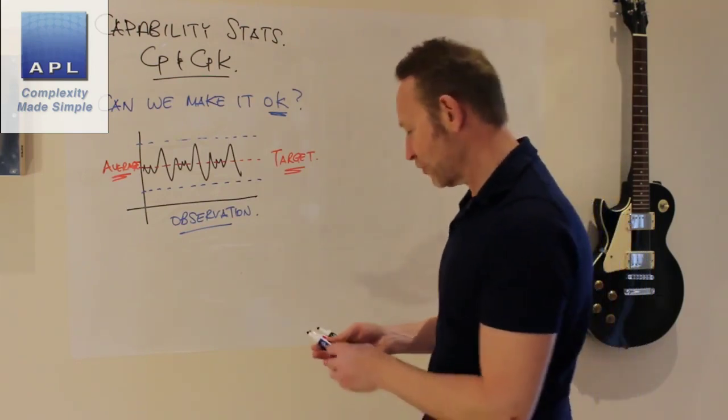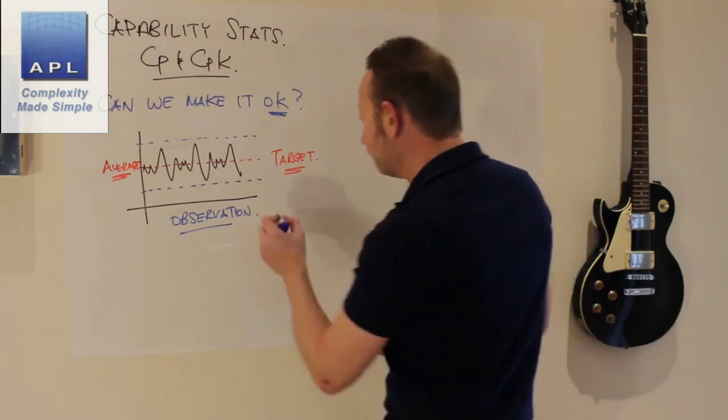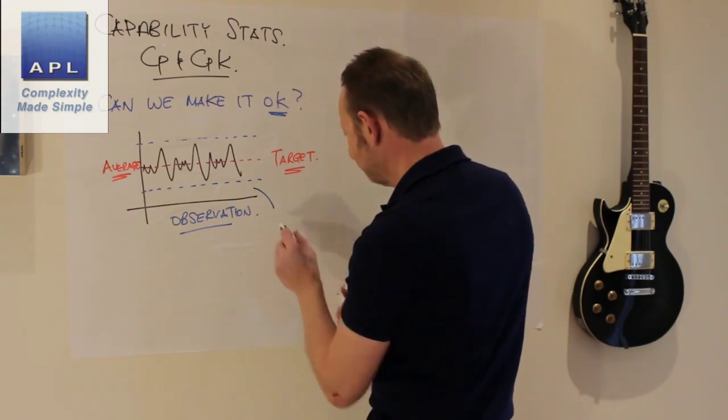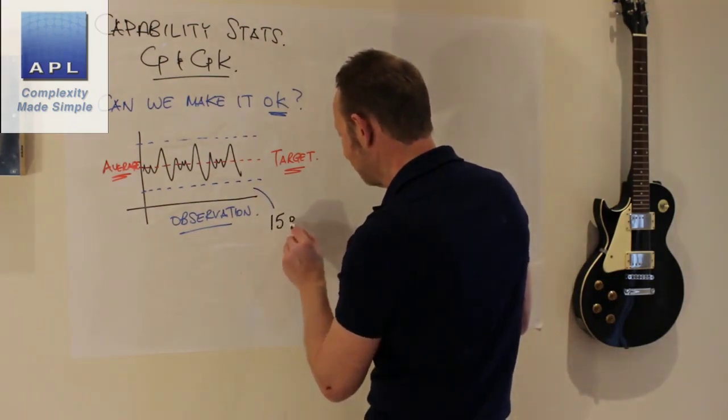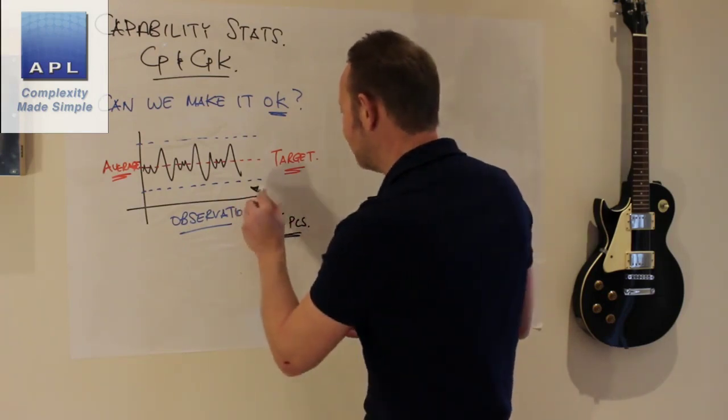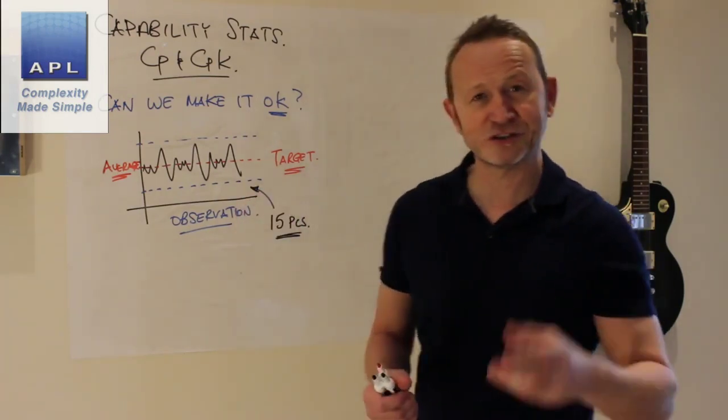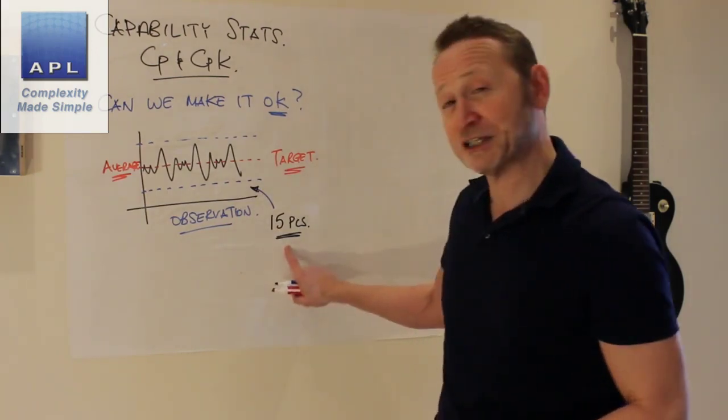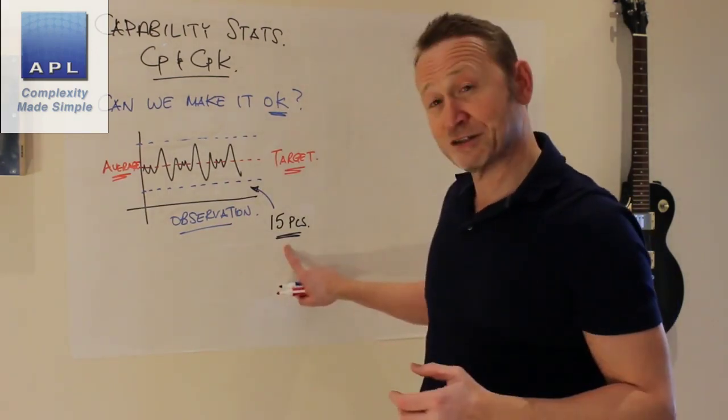The first thing is the sample size. Let's say you've taken 15 pieces out of the process. It's a poor sample size typically, and you are saving money here. This should be between 30 and 50.